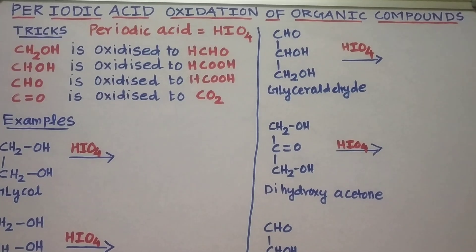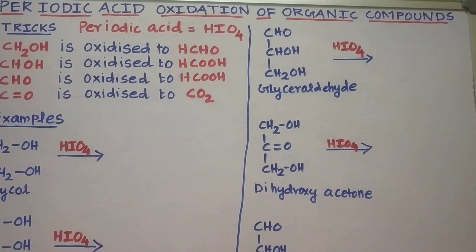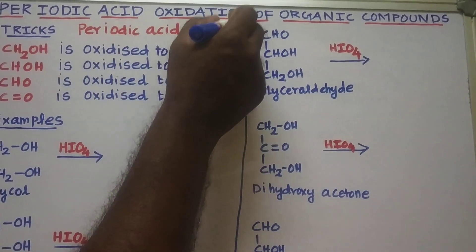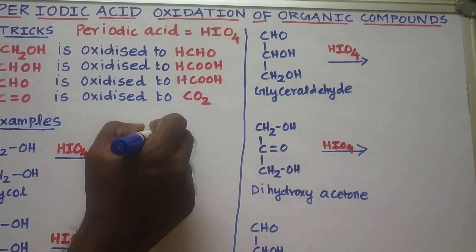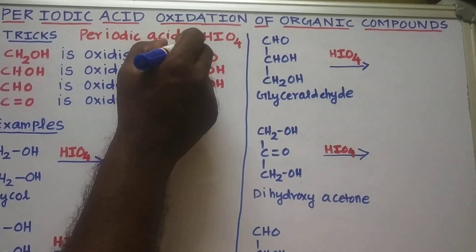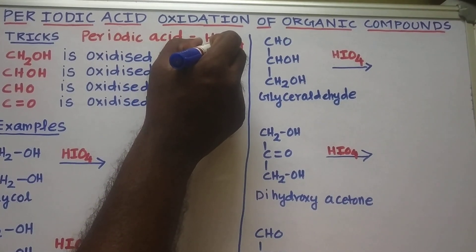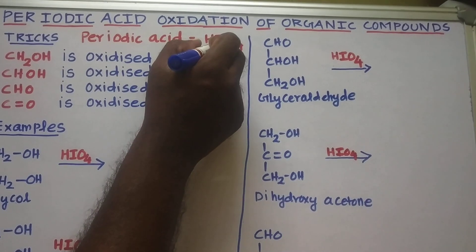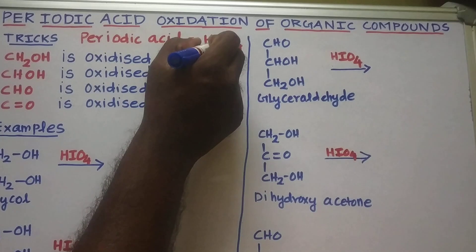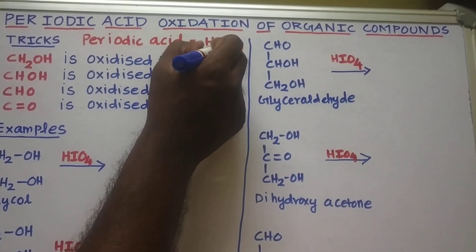Good morning students. Today we are going to discuss a very important topic in chemistry called Periodic Acid Oxidation of Organic Compounds. The formula of periodic acid is HIO4. In this compound, the iodine is present in the +7 oxidation state, so it can easily undergo reduction. As a result, it can oxidize other organic groups easily.